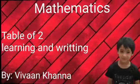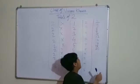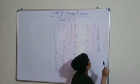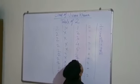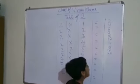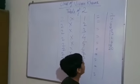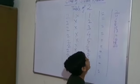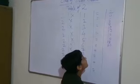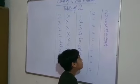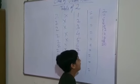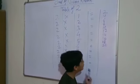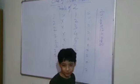Now guys, let's go. 2 times 1 is 2, 2 times 2 is 4, 2 times 3 is 6, 2 times 4 is 8, 2 times 5 is 10, 2 times 6 is 12, 2 times 7 is 14, 2 times 8 is 16, 2 times 9 is 18, 2 times 10 is 20.